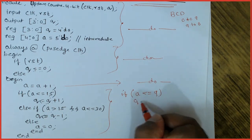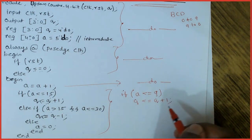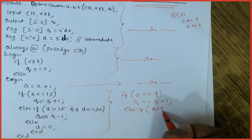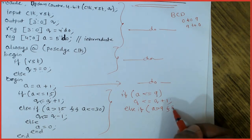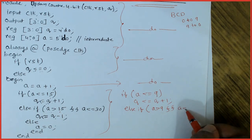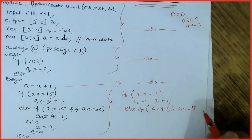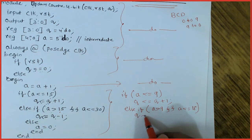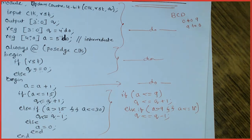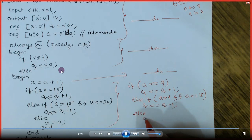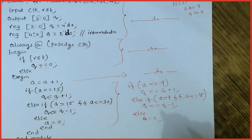In the BCD up-down counter, the condition changes: if 'a' is less than or equal to 9, Q should increment. Else if 'a' is greater than 9 and less than or equal to 18, Q should decrement — because after reaching 9, for the next nine clock cycles it should decrement back to 0. The else case sets 'a' to 0. The rest of the code remains the same.